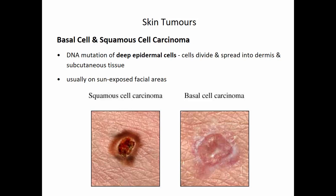There are three main types of skin cancer. The two least serious types are basal cell carcinoma and squamous cell carcinoma. Both of these types of tumors are caused by DNA mutations that occur in the epidermis, in the very bottom layer. These cells lose control of division, divide uncontrollably, and then spread into the dermis area and into the subcutaneous tissue.